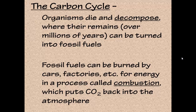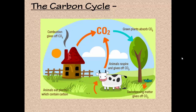Fossil fuels can be burned by cars and factories for energy in a process called combustion, and that puts carbon dioxide back into the atmosphere. Here we are back in our cycle where carbon dioxide has gotten back to where it started. In this diagram: decomposing matter puts CO2 into other organisms; animals eat the plants and respire, giving off CO2; combustion also gives off CO2; and green plants absorb that carbon dioxide from the atmosphere.